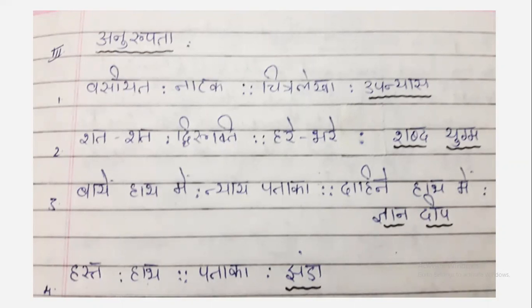For example: suk sampathi, dhan dham, or hare bhare van upavan. I hope you understood the difference. Third one: Bai hat mein Nyaya Pata ka — Dahine hat mein Gyan Deep. Bai hat mein means in the left hand, justice of flag; in the right hand, light of knowledge. Fourth one: Hast — Hat, Pata ka — Jhanda. Hast means hand, Pata ka means flag.